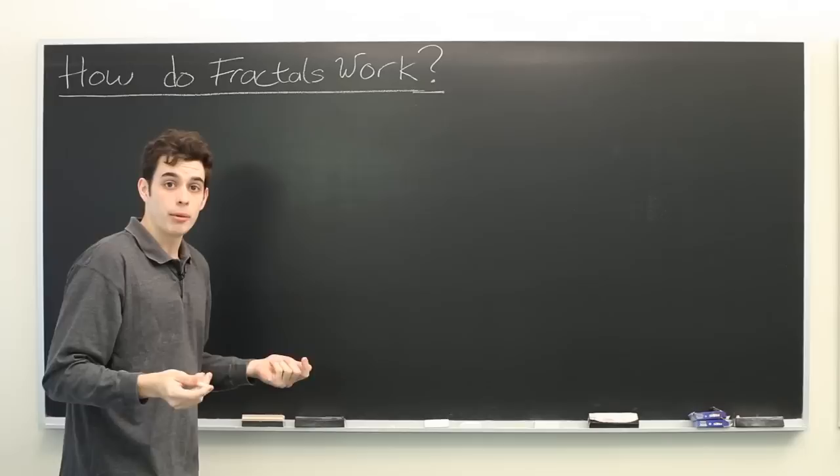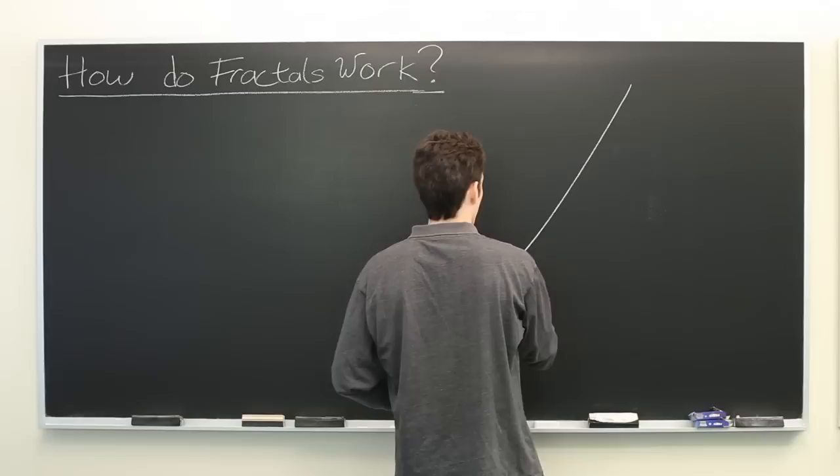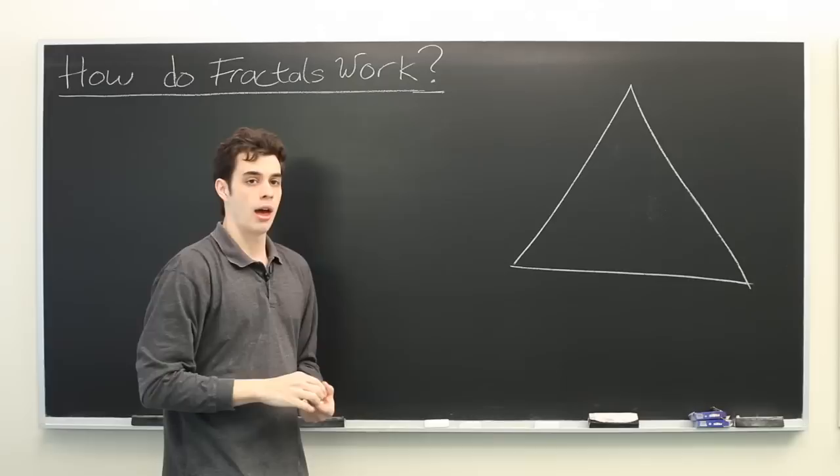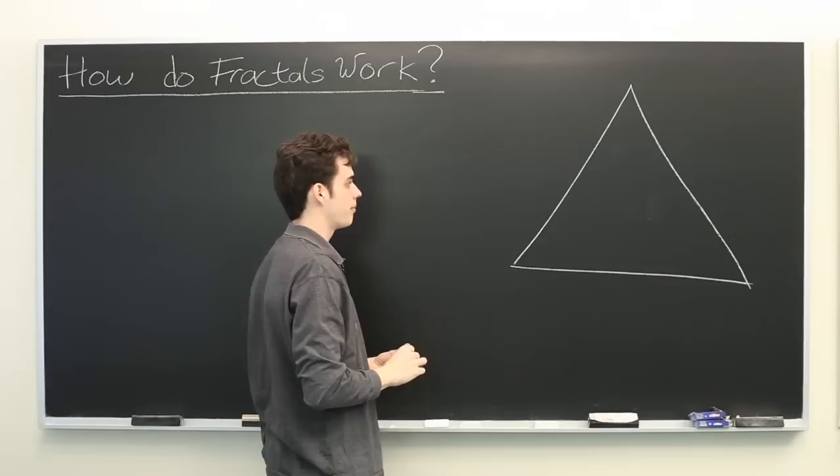One famous example of this is Sierpinski's Triangle. Just construct it as follows. Start with an equilateral triangle, then take that triangle, shrink it down to half its size and iterate it three times.